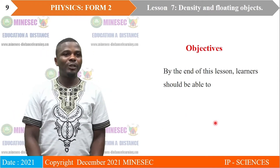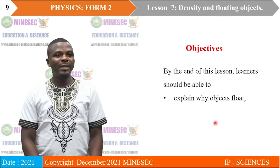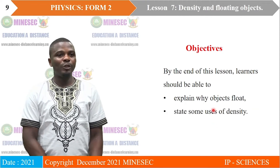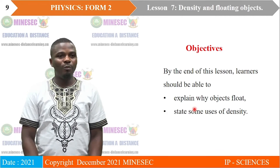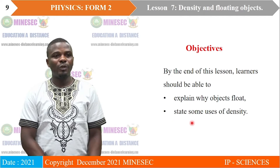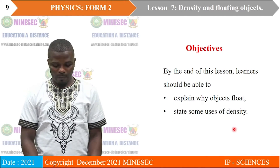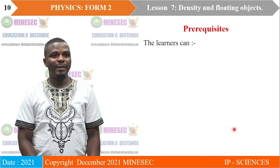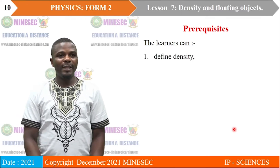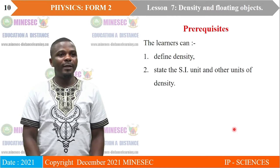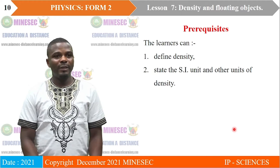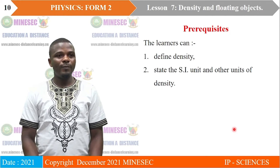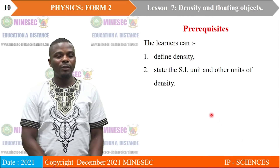By the end of the lesson, learners should be able to explain why objects float and state some uses of density. Learners should be able to explain why some objects will float and some will sink, and also state some uses of density. What you are supposed to know before you understand today's lesson are the definition of density, and the SI unit and other units of density.